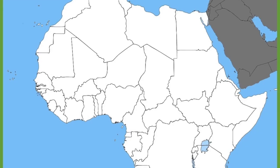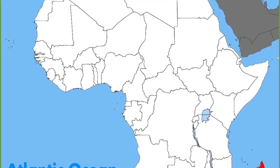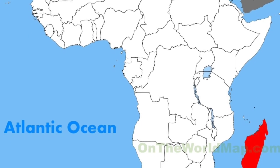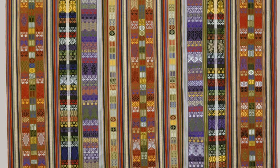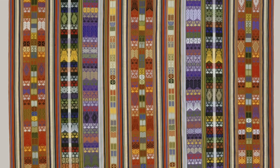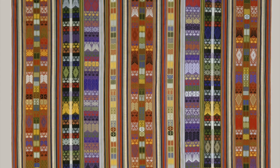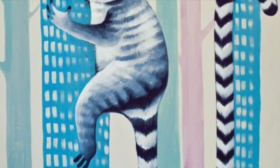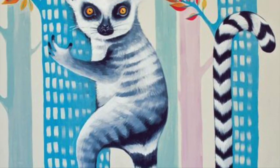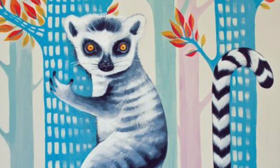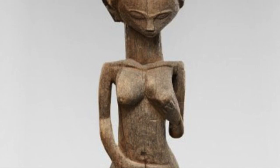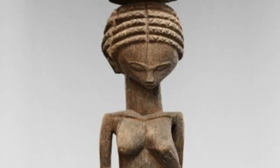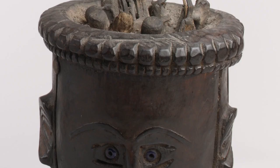The next country that we will talk about is going to be Madagascar. Madagascar is located east off the coast of Africa. When it comes to Madagascar, there's a variety of different types of arts, whether it's from paintings, sculptures, or art using fabrics and cloths. A lot of their art is influenced from countries in Asia and also in Africa.